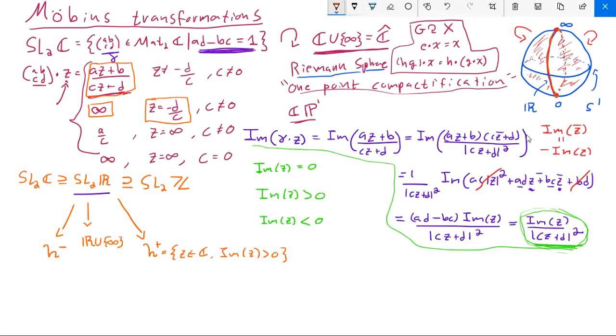So what we can do instead of going all the way to the full Riemann sphere and asking how SL2Z acts, we can ask ourselves, how does it act on each of these subspaces? So for the time being, we're not really going to be too interested in how it acts on R plus the point at infinity. This is just shuffling around some real numbers. And there's a symmetry between the lower complex plane and the upper complex plane. It's going to behave in the same way on both of these, so it will suffice for our purposes to just study the action on the upper half complex plane.